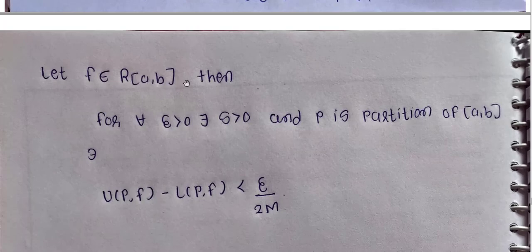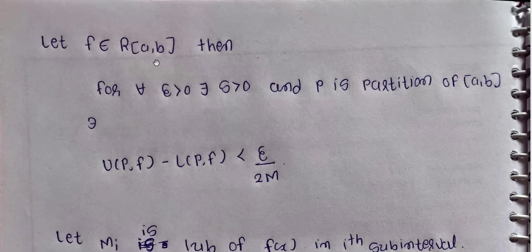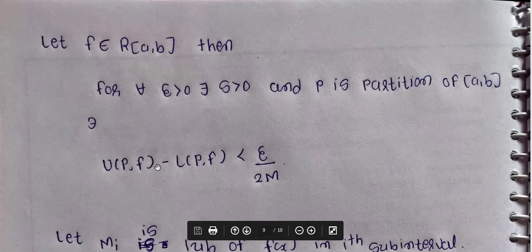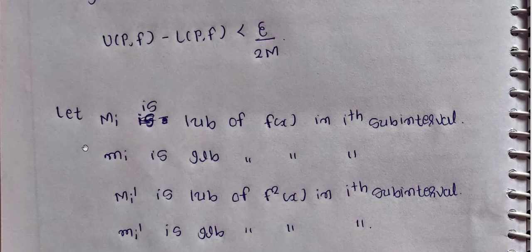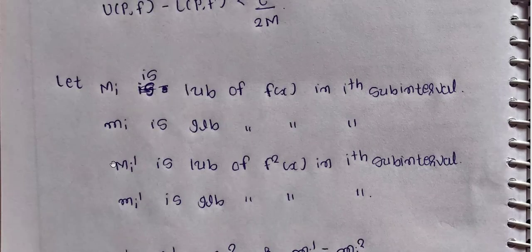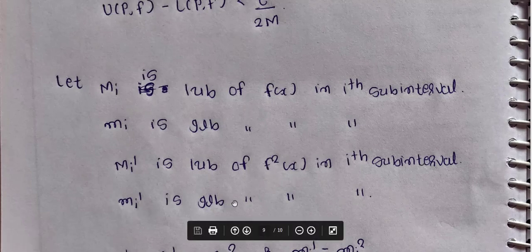Since f is Riemann integrable over closed interval [a, b], for every epsilon greater than 0 there exists delta greater than 0 and a partition P of closed interval [a, b] such that U(P, f) minus L(P, f) is less than epsilon upon 2M. Let capital Mi be the LUB of f of x in the i-th subinterval, small mi be the GLB of f of x in the i-th subinterval, capital Mi' be the LUB of f squared of x in the i-th subinterval, and small mi' be the GLB of f squared of x in the i-th subinterval.